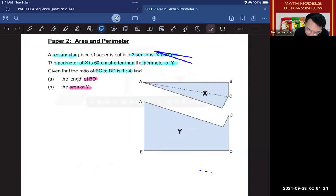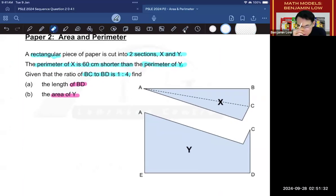Alright, so again, before I do the question, I would like to explain a few things here. The first thing they are telling you is that the ratio of BC to BD is 1 is to 4. So where is BC? Well, BC is here and BD is this line plus this line because as you can see here, this is C, right?